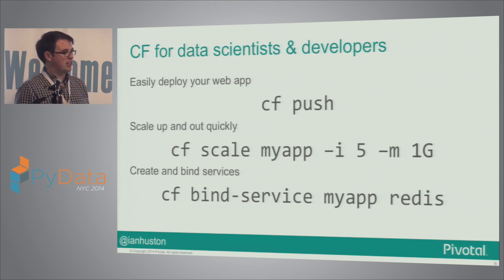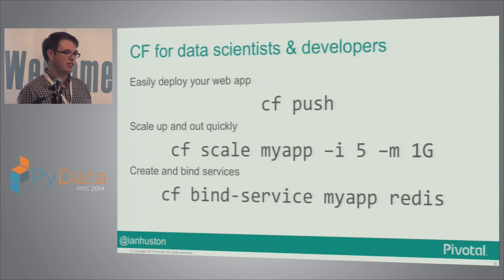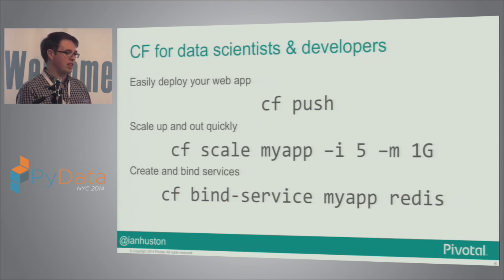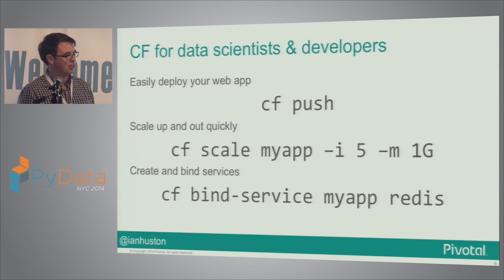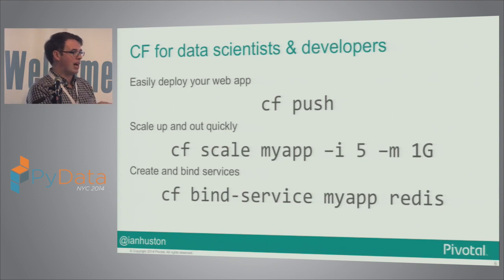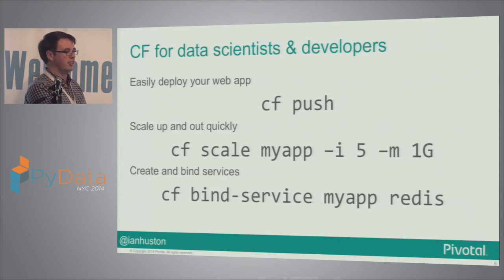An interesting thing for data science and data people is you can actually bind data services into your application. Things like Redis, RabbitMQ, Cassandra — you can spin those up, start them, and then connect them into your app without much hassle on the back end. You don't need to go off and install Cassandra yourself and do all that yourself.